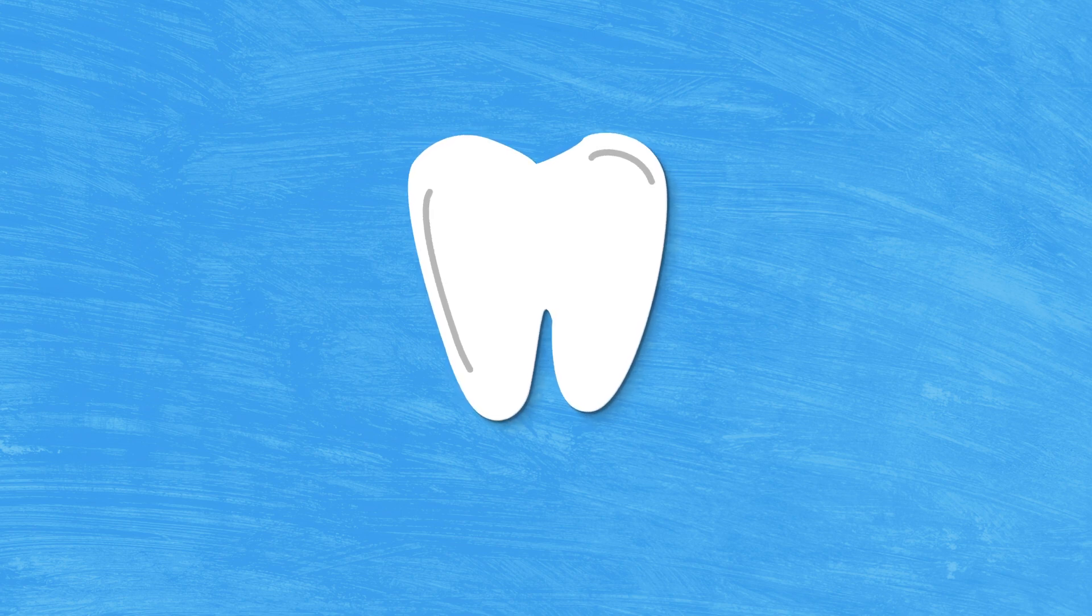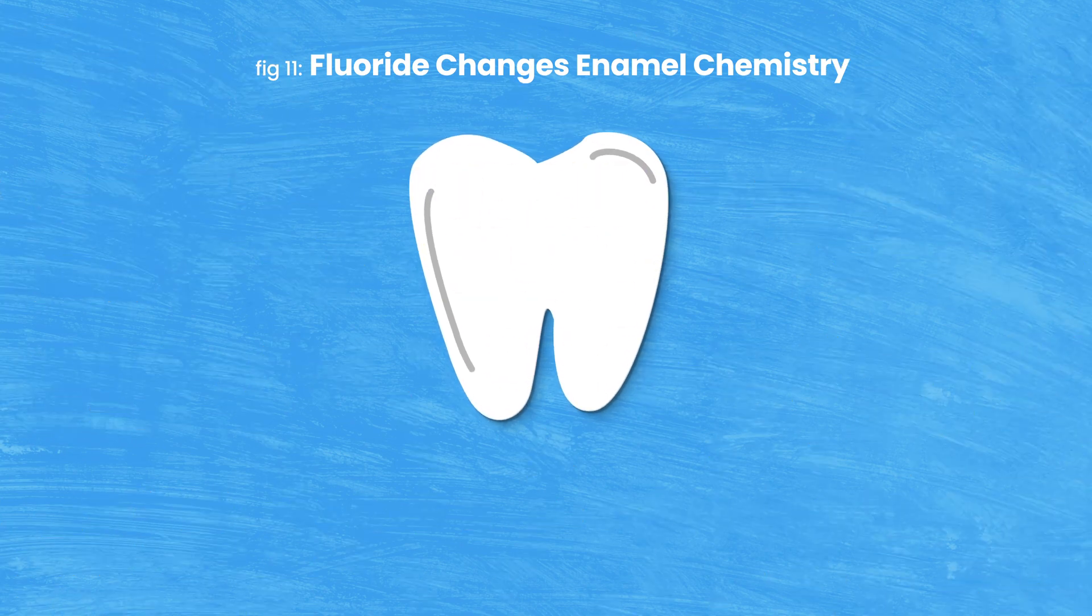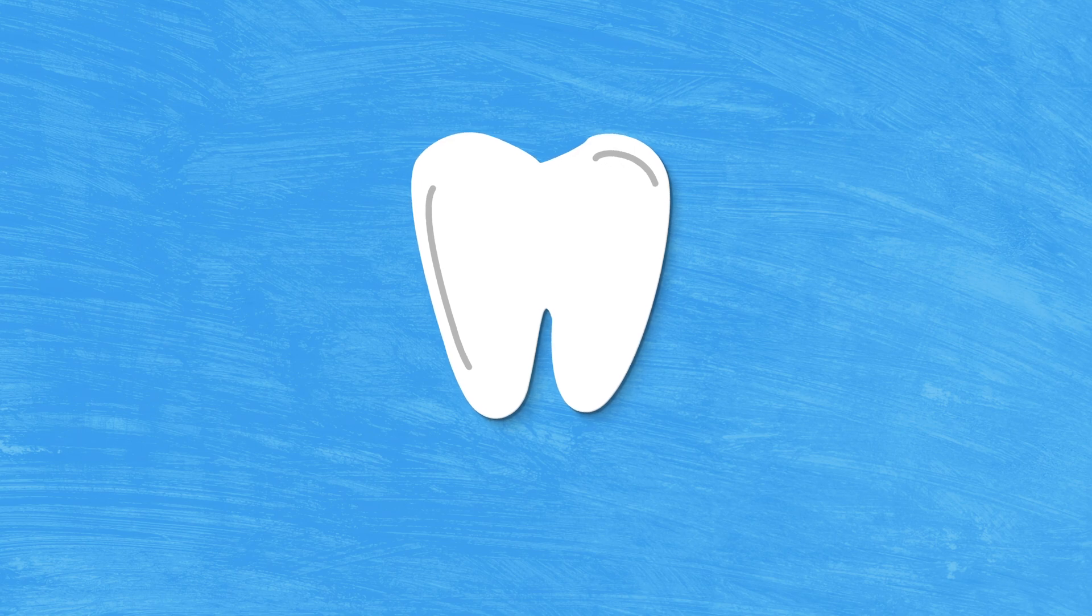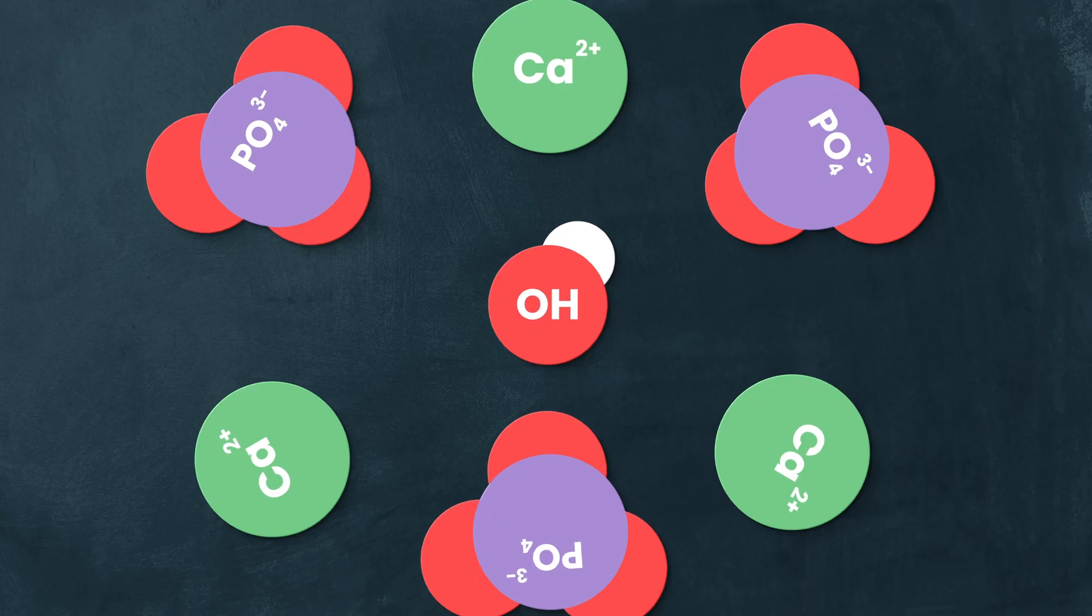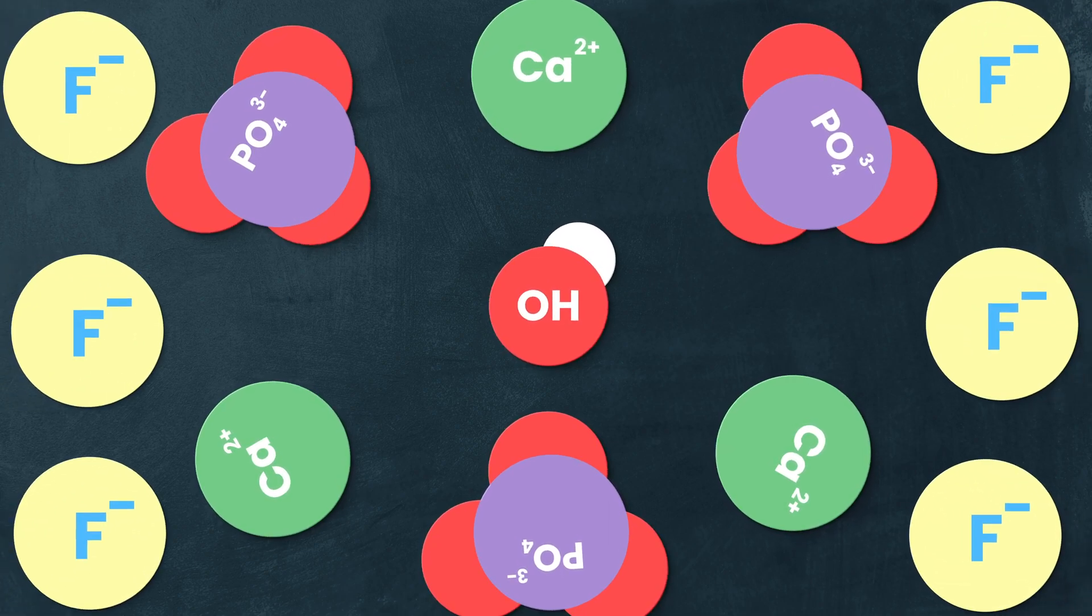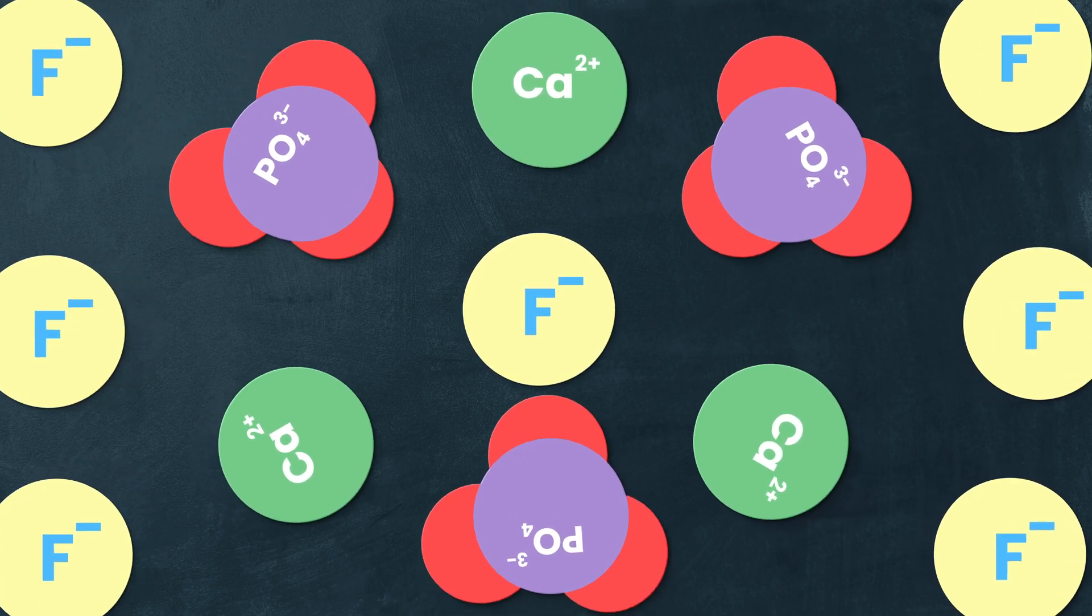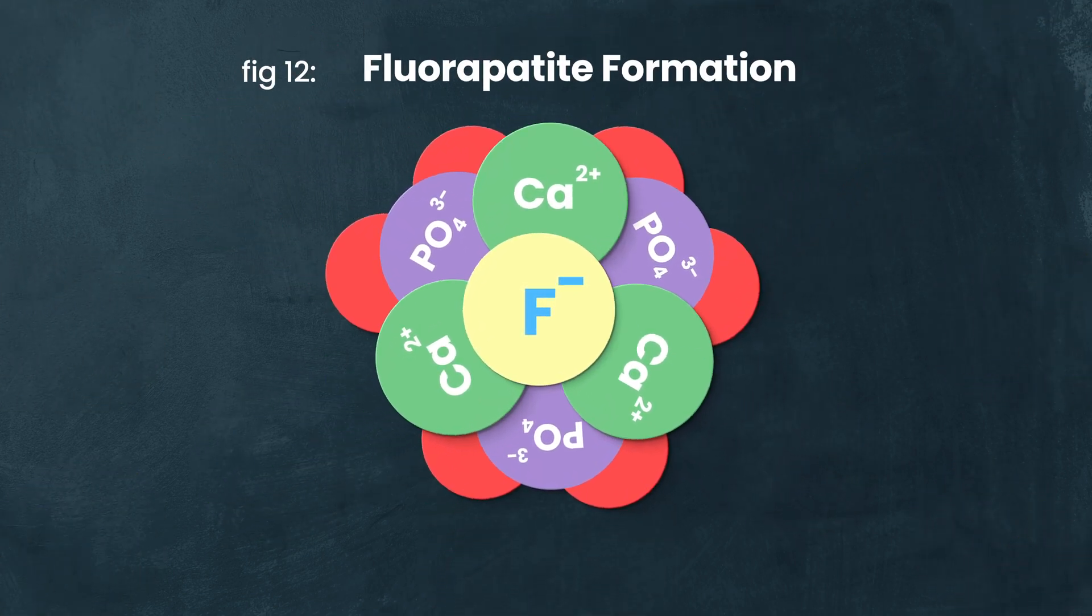And now we finally start getting into the cool part. Because if you brush your teeth with fluoride-enriched toothpaste, which most of you are, or consume water with fluoride ions in it, you can push the equation even further. Because back in that moment when your enamel was putting itself back together, back during remineralization, if there are fluoride ions present in your saliva, they're going to swoop in and replace those hydroxyl groups in the crystal, making an entirely different compound. Fluorapatite. Yeah, it's like apatite but with more fluorine. Names, right?